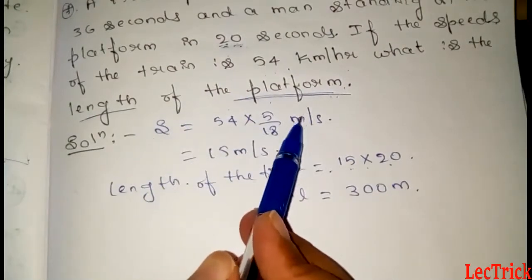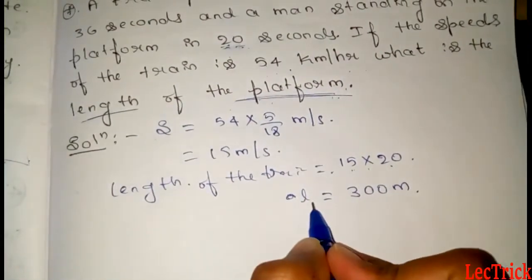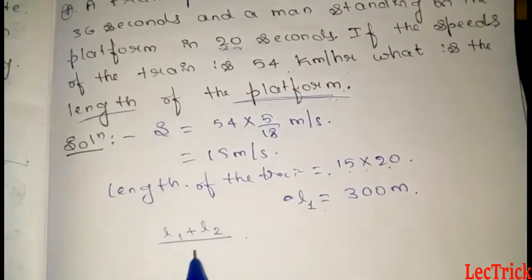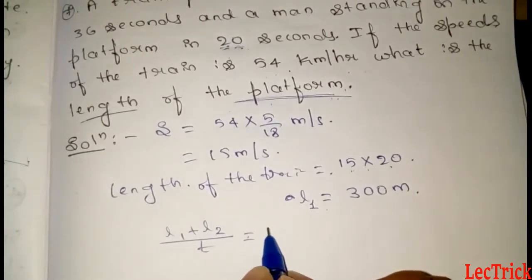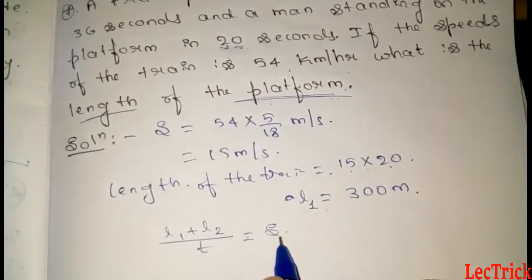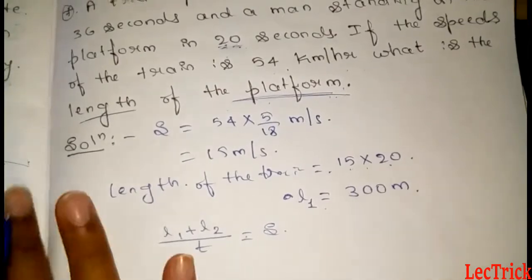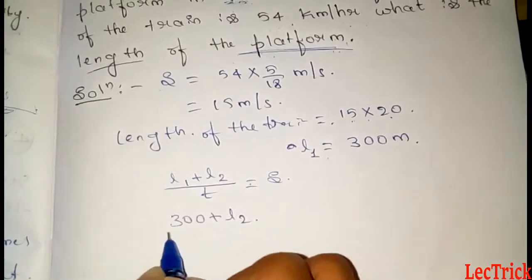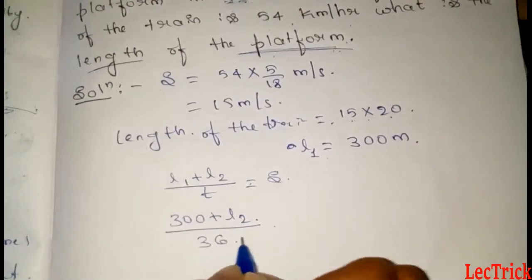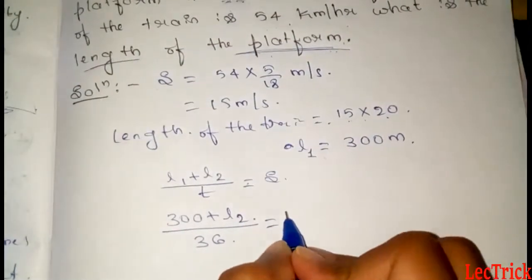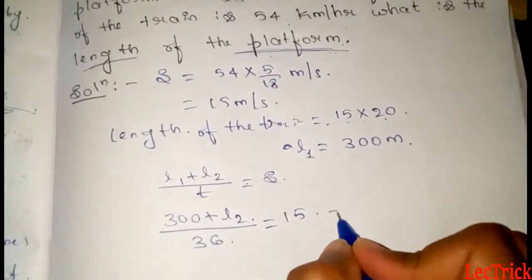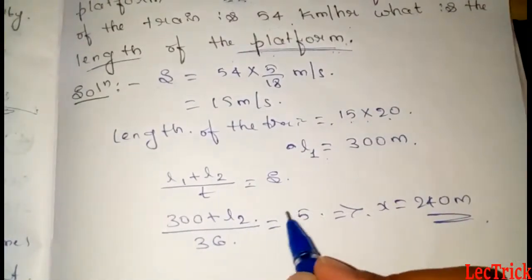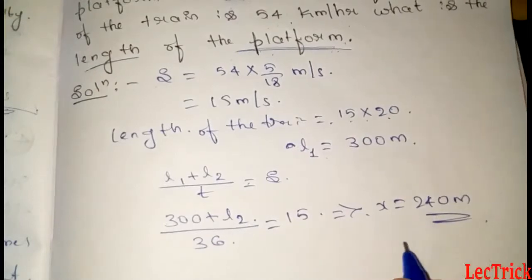The length of the platform: using the distance formula, speed times time equals 15 meters per second times 36 seconds equals 540 meters. Then subtract the length of the train: 540 minus 300 equals 240 meters.